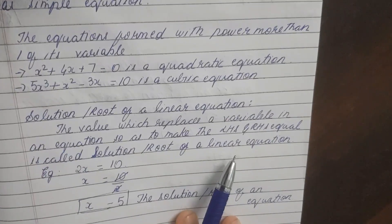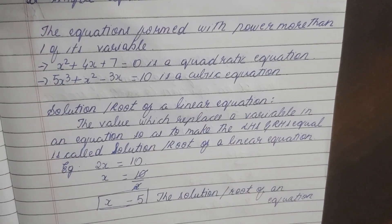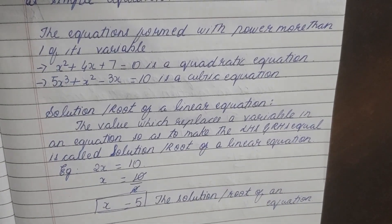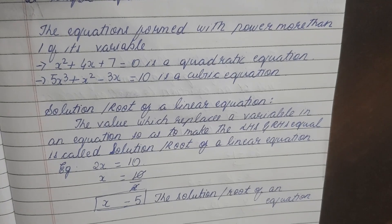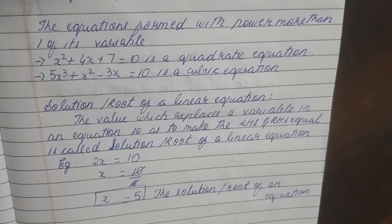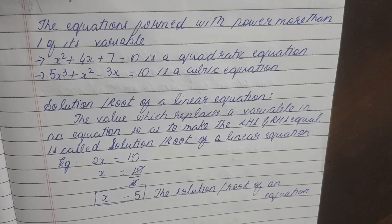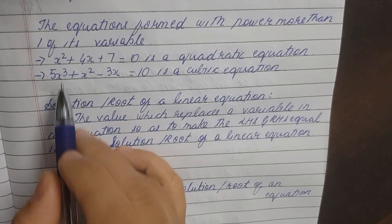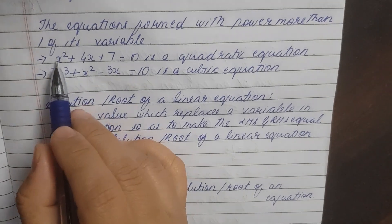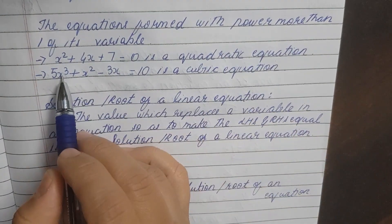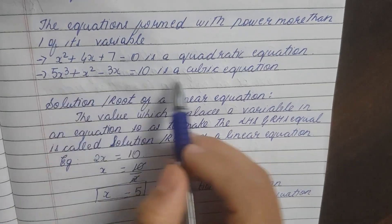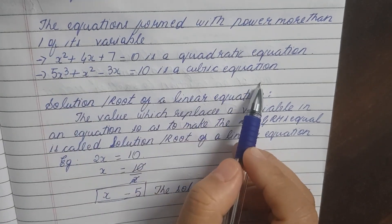Now, the equations we just discussed have power 1, so they are linear equations in one variable. But if the power is 2, meaning x to the power 2, then it is called a quadratic equation. And if the power is 3, it is called a cubic equation.